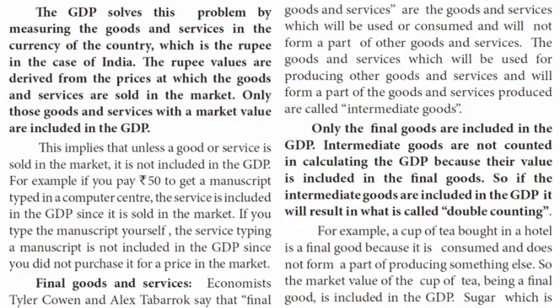If you want to sell goods or services in the market, that counts toward GDP. For example, if you go to a computer center and type, print out, scan, or print — and you pay 50 rupees for that service — that transaction is counted in GDP as a market value.